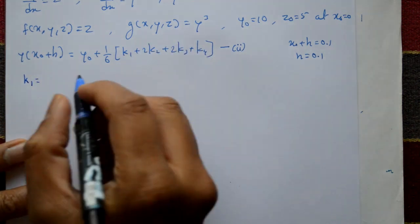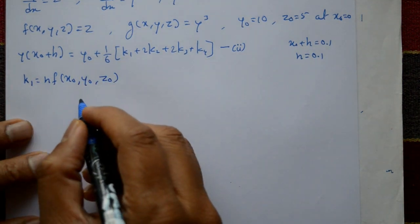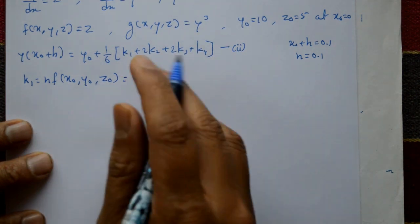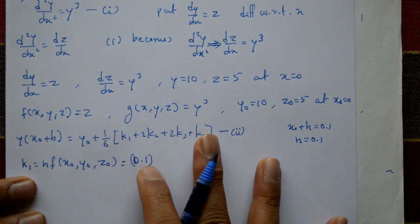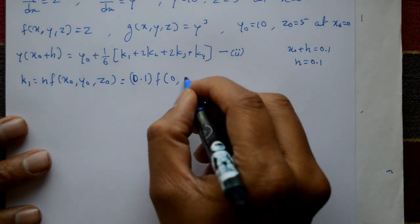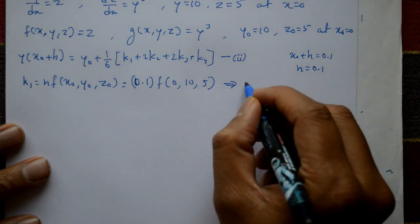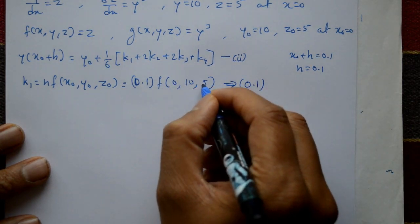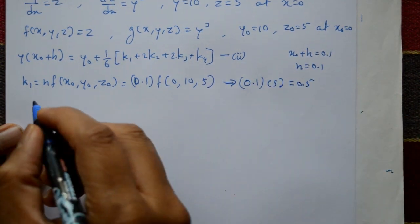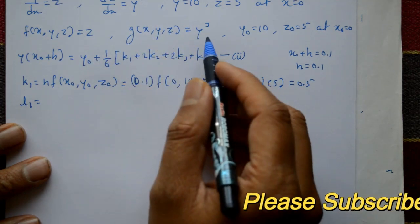Now we calculate the k and l values. k1 = h · f(x₀, y₀, z₀) = 0.1 × z₀ = 0.1 × 5 = 0.5. Then l1 = h · g(x₀, y₀, z₀) = 0.1 × y₀³ = 0.1 × 10³ = 0.1 × 1000 = 100.